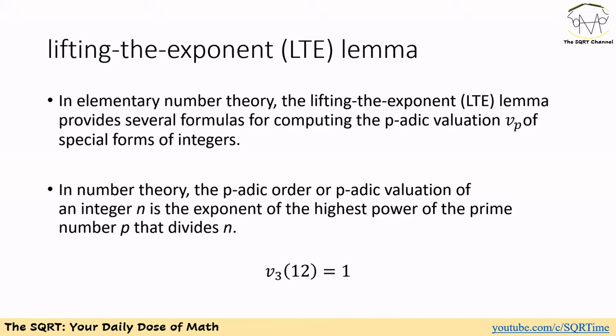We define p-adic valuation on integer n as the exponent of the highest power of the prime number p that divides n. Let's consider an example. We have 12 as an integer n, and we're looking to find the exponent of the highest power of the prime number 3 that divides 12. Obviously, 3 divides 12, and we cannot say 3 to the power of 2 divides 12, so 1 is going to be the highest power of 3 that divides 12.